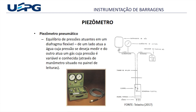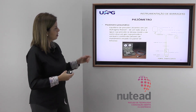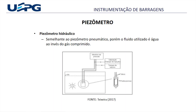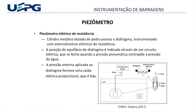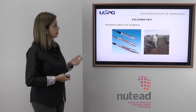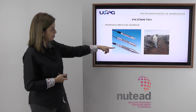No piezômetro pneumático, o equilíbrio das pressões é feito num diafragma flexível, onde de um lado atua a água cuja pressão se deseja medir, e do outro lado um gás de pressão variável e conhecida. Busca-se o equilíbrio dessas duas substâncias e, através de um manômetro, esse valor é medido. O piezômetro hidráulico é semelhante, mas o fluido utilizado é a água ao invés do gás comprimido. Esses piezômetros elétricos são instalados dessa forma em aterros de barragens, com folga nos fios para que não se rompam durante a compactação.